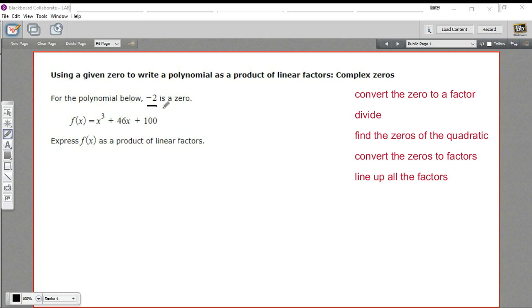Let's start with converting this zero to a factor. Basically what this is saying is x equals negative two. So if we want to convert that to a factor, we want to set that equal to zero. I'm going to do that by adding two to both sides. So I get x plus two equals zero. So this is one of our factors, x plus two. That's part of the final answer. So we want to remember that.